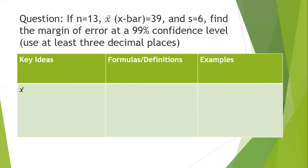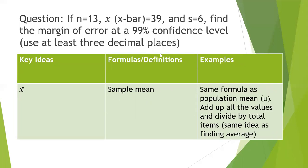X with a line over it is called X bar. That's your sample mean. It uses the same formula as the population mean. The population mean uses a symbol called mu, a Greek M. It's the same idea as your typical average - add up all the values and divide by the total number. Excel does a great job of calculating this when you need to.